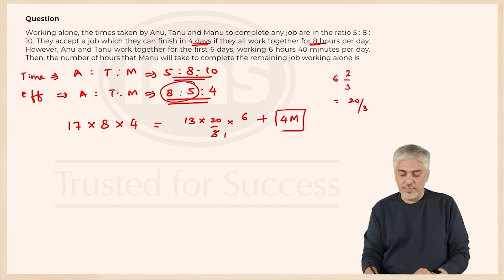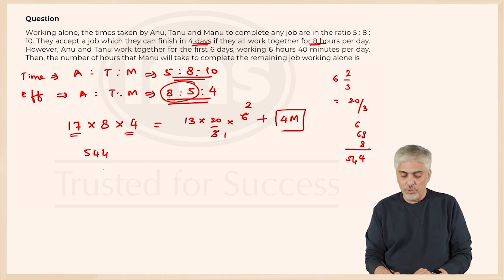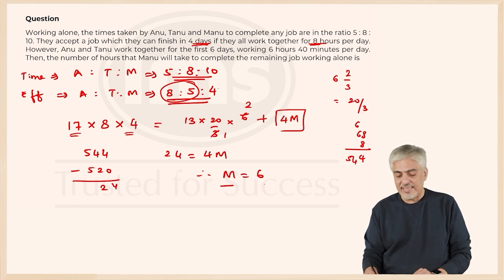So let us solve this. This calculation was slightly difficult. 17 into 4 is 68, 68 into 8. 8 times 8 is 64, carry 6, 8 times 6 is 48, 48 plus 6 is 54, so 544. Minus 13 times 2 is 26, times 20 is 520. So I am left with 24 units. 24 units equals 4M, and therefore M will take 6 hours.